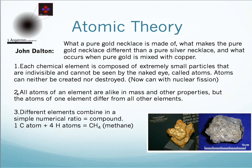The second thing that John Dalton came up with was that all atoms of an element are alike in mass and other properties, but the atoms of one element differ from all other elements. So for example, here we have gold and silver. The atomic mass of gold is 196.9, whereas the atomic mass of silver is 107.8.